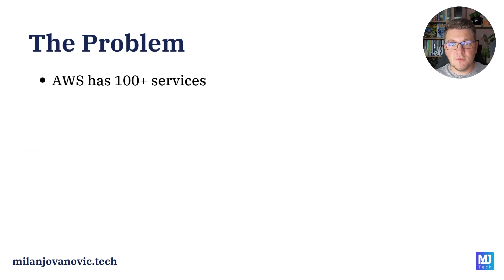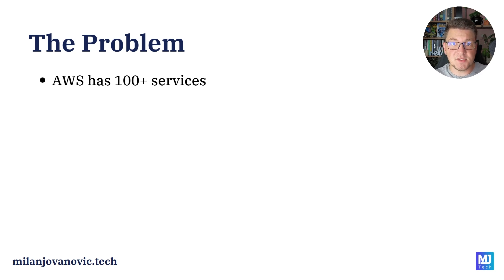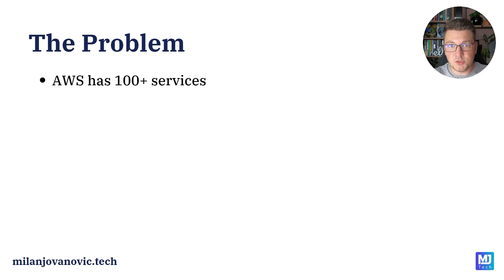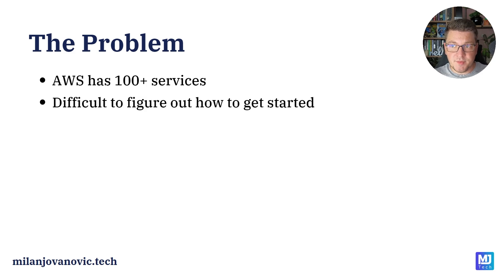I'm going to start by briefly explaining what problem Amazon Elastic Beanstalk solves. AWS has more than 100 services, and if you feel overwhelmed by the sheer number of services, just imagine how difficult it is to set up all of the services that you need to run an application. You need to set up a virtual private cloud, configure your resources, connect them with each other, define inbound and outbound rules, and then expose your application through an API gateway.